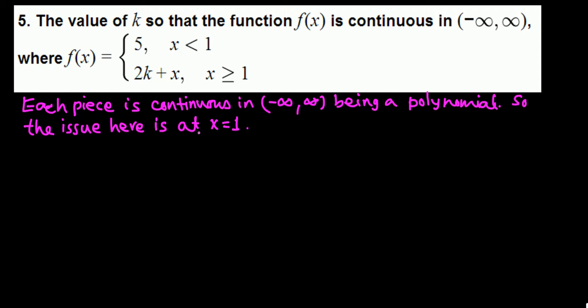Now we want to find the value of k so that this is continuous. The first condition for a function to be continuous is the limit should exist at 1. For a limit to exist, we have to have left hand limit equal to right hand limit.